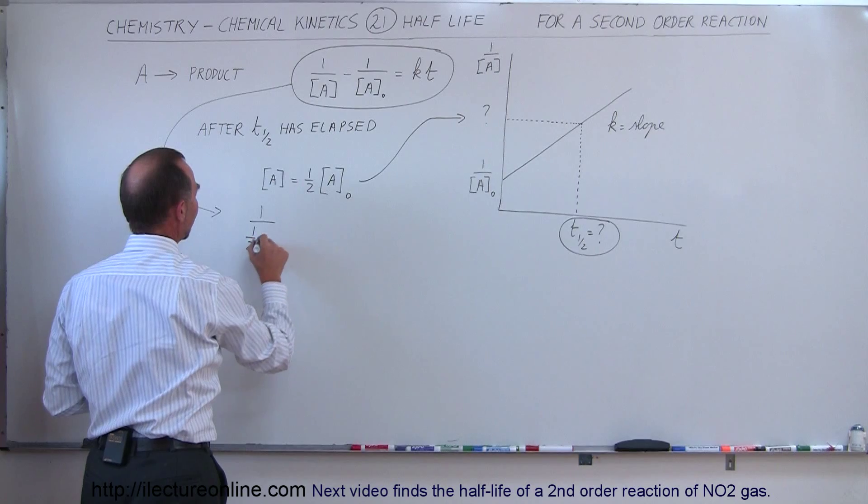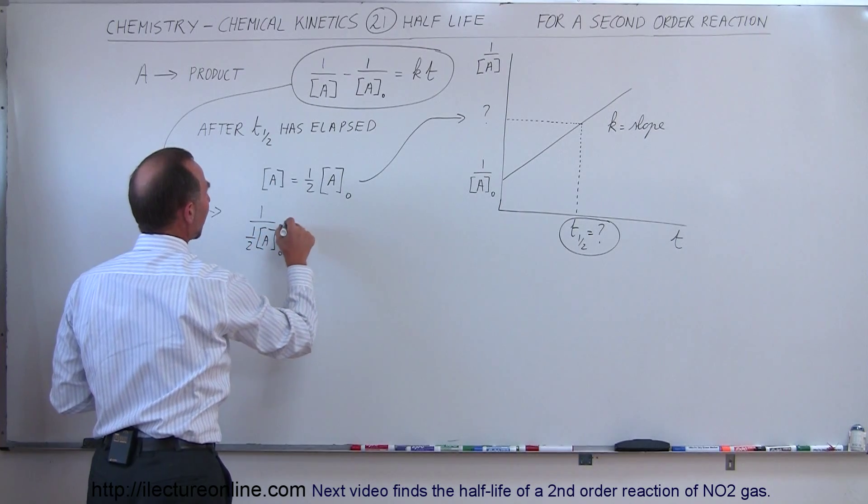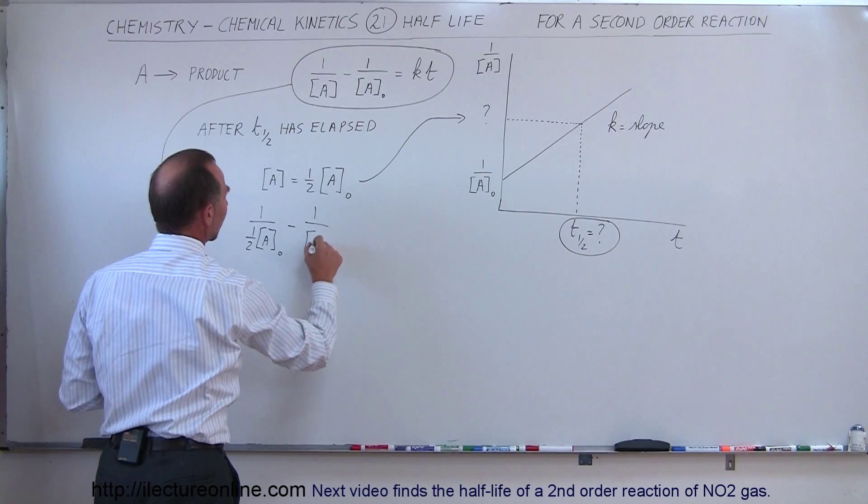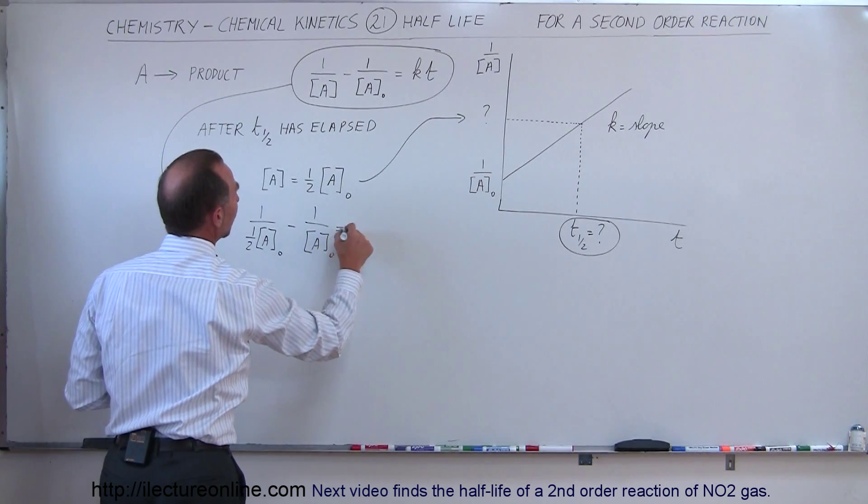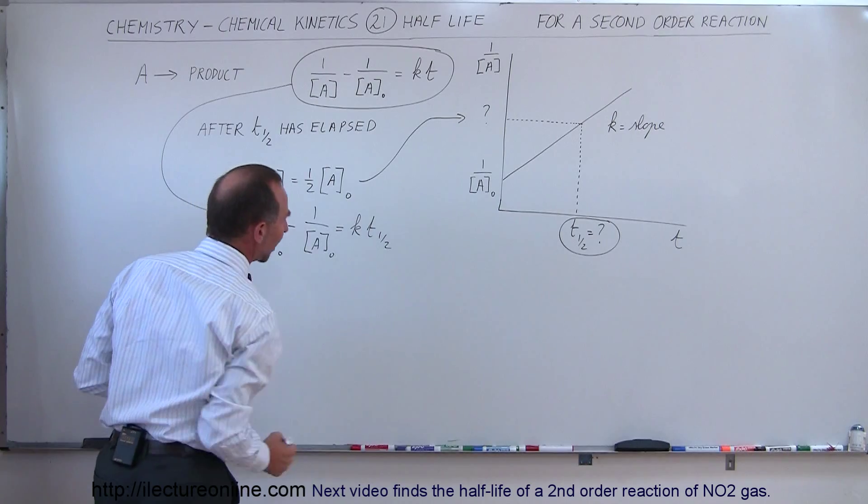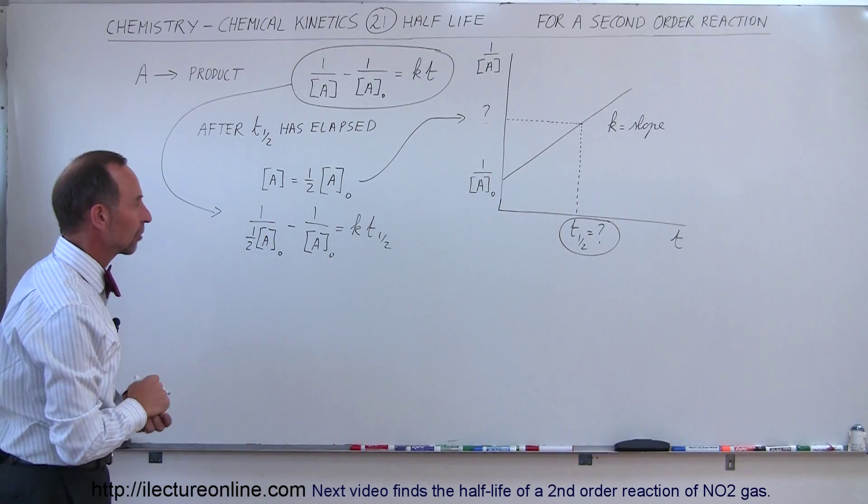So this becomes 1 over half the original concentration of A, minus 1 over the original concentration of A, which is equal to K times the half-life time to get to half the original concentration.